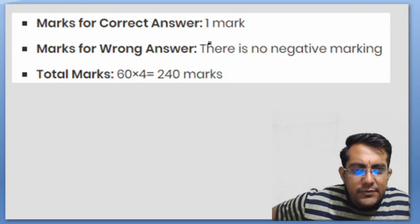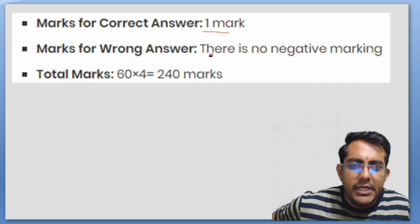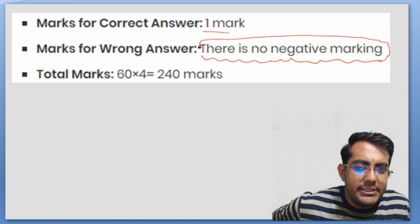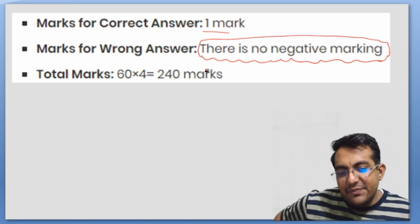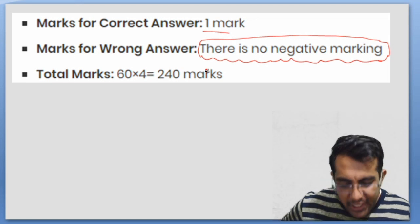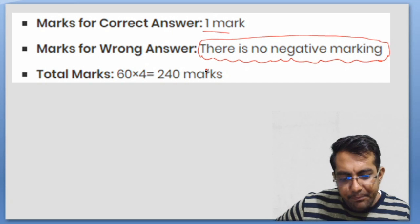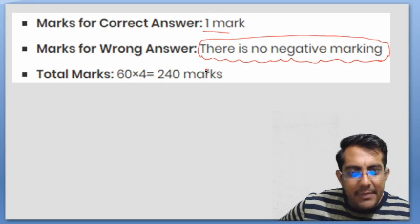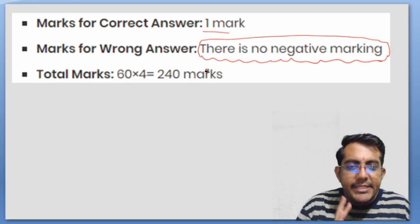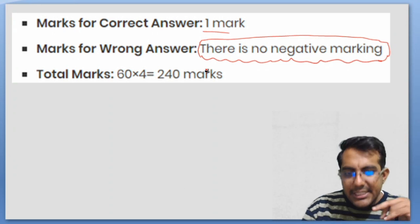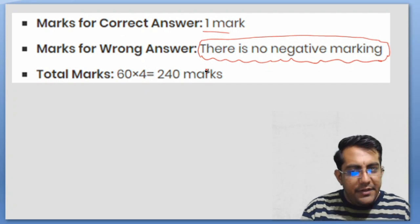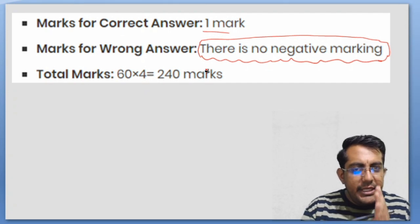Marks for correct answer is one. There is no negative marking, which is an advantage for this exam. You should consider that even if there's a 50-50 chance, let's say you have four options and you think two are not correct, you can still attempt it. When it comes to JEE exam there is negative marking, but since there's no negative marking here, the difficulty level is somewhat less than other exams.